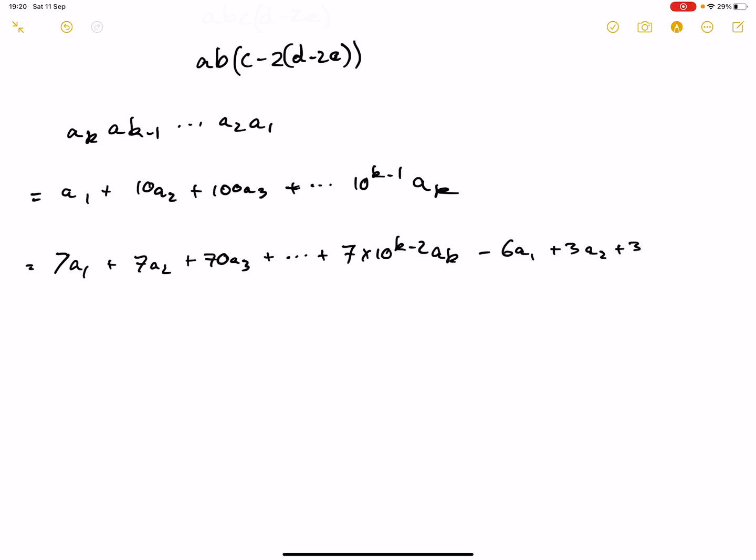Plus 3A2 plus 30A3 and so on. Plus, brackets, that. And that's 7, so a multiple of 7, plus 3 times minus 2A1 plus A2 plus 10A3 plus 100A4, plus all the way to 10 to the K minus 2 times Ak.